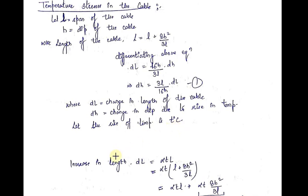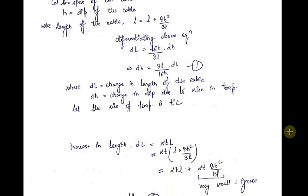We also know that whenever there is a rise in temperature, the increase in length is equal to alpha·T·L, where alpha is the coefficient of thermal expansion, T is the rise in temperature, and capital L is the original length of the cable. After putting the value of capital L and simplifying by opening the bracket, I will get the increase in length as alpha·T·l plus alpha·T·(8h² / 3l).